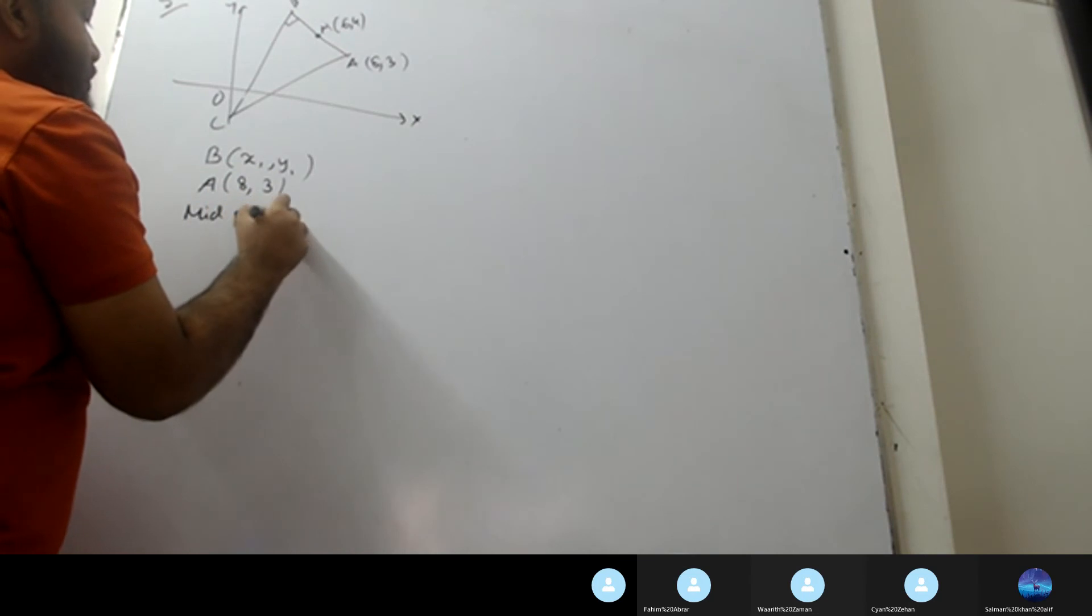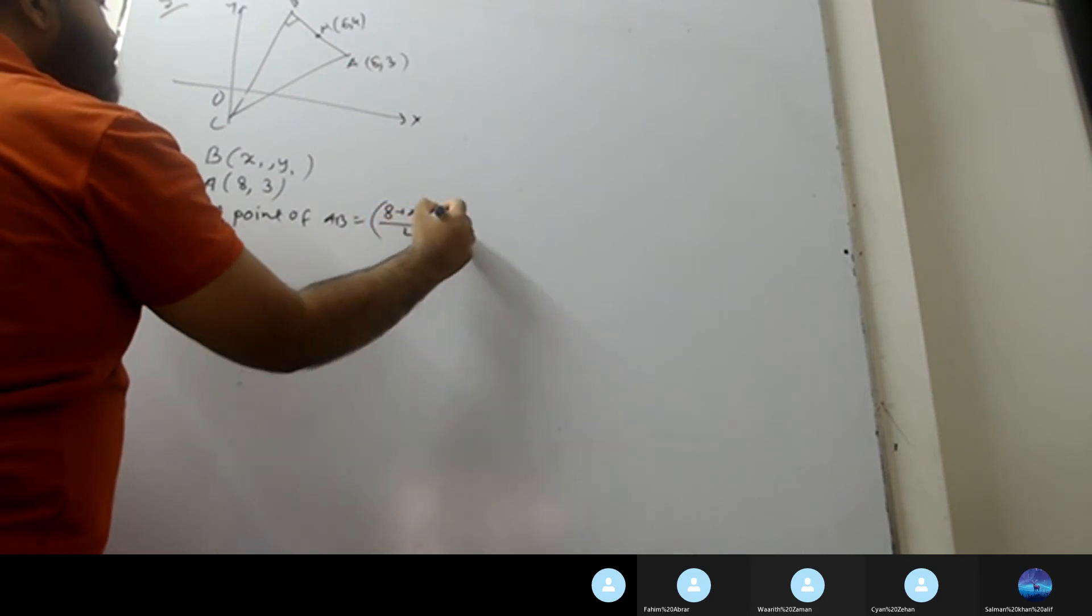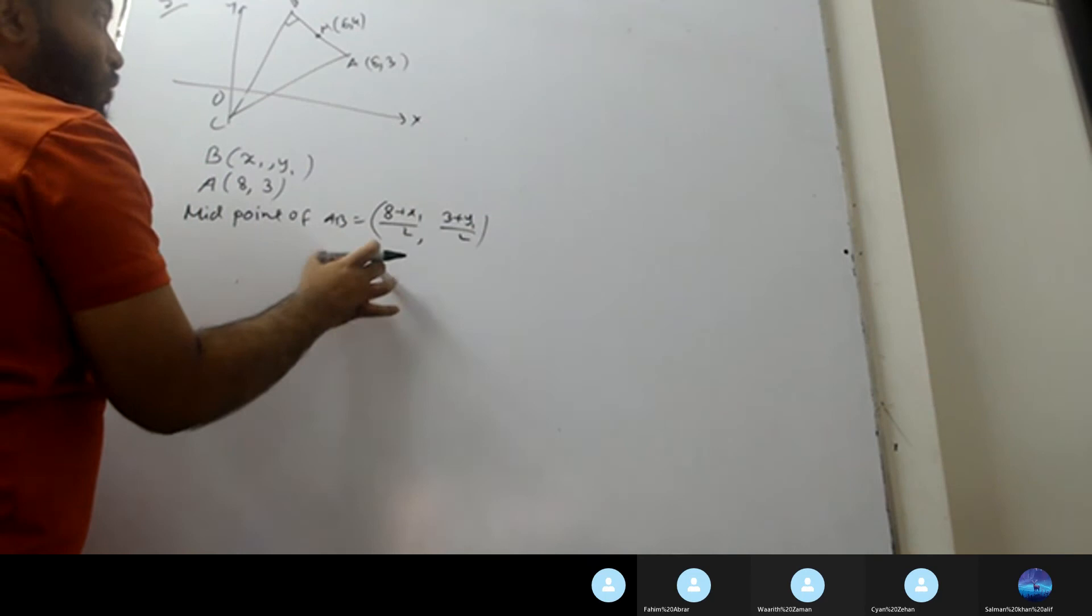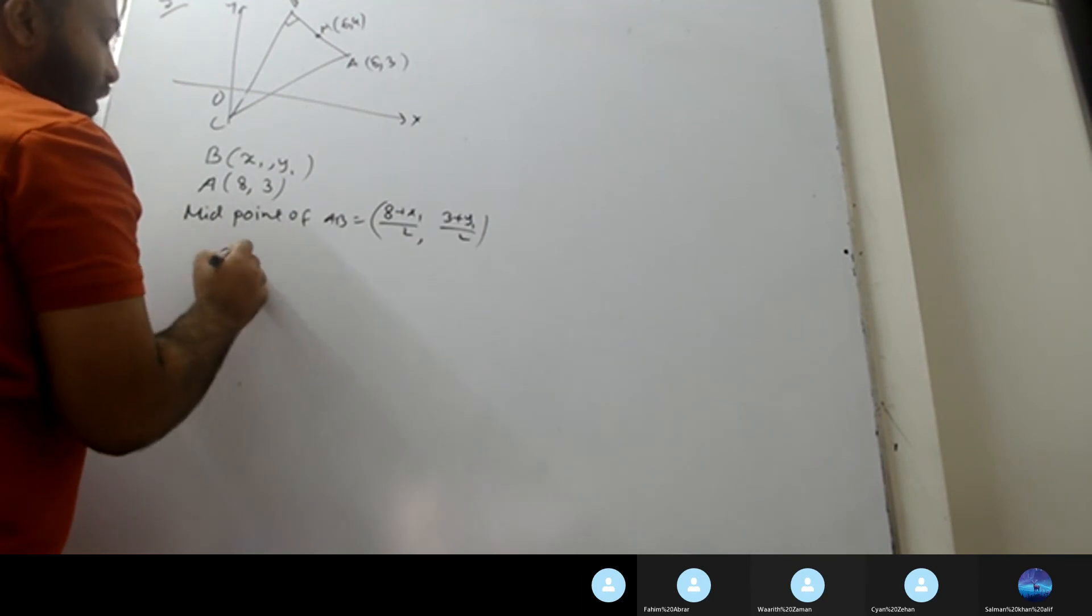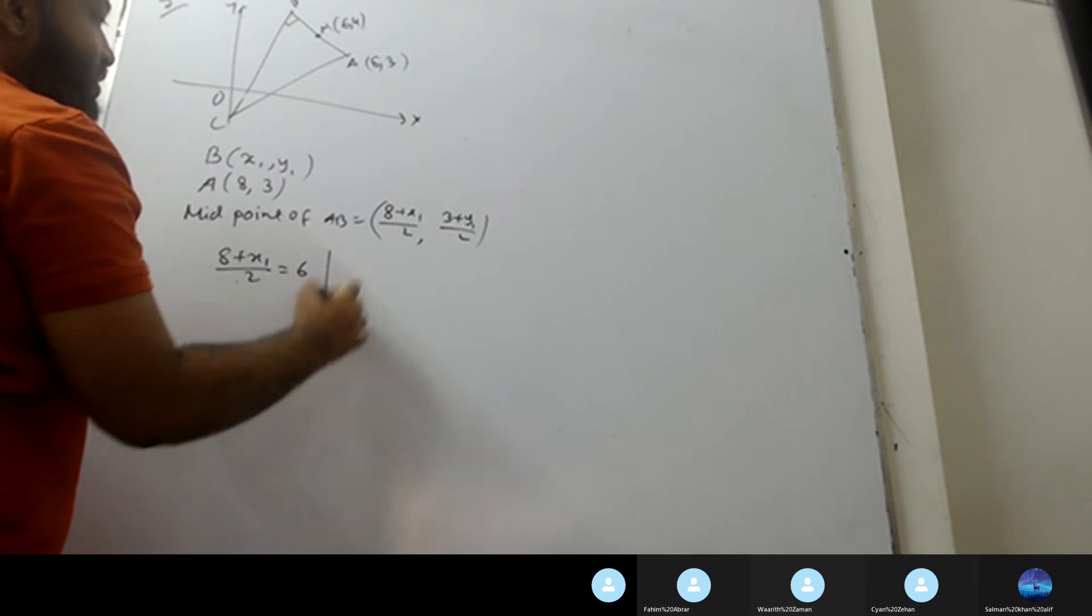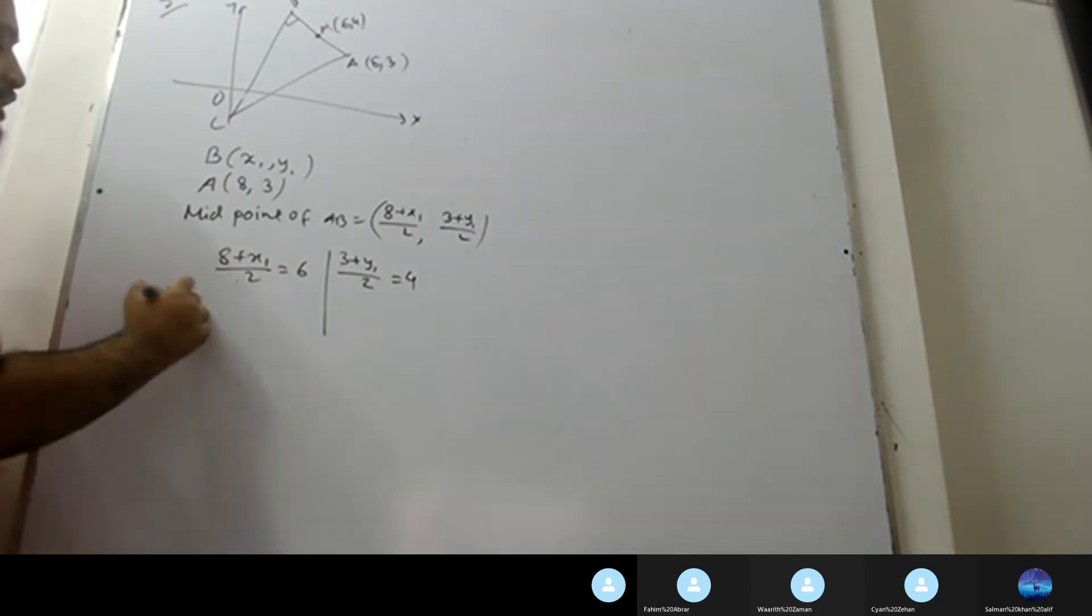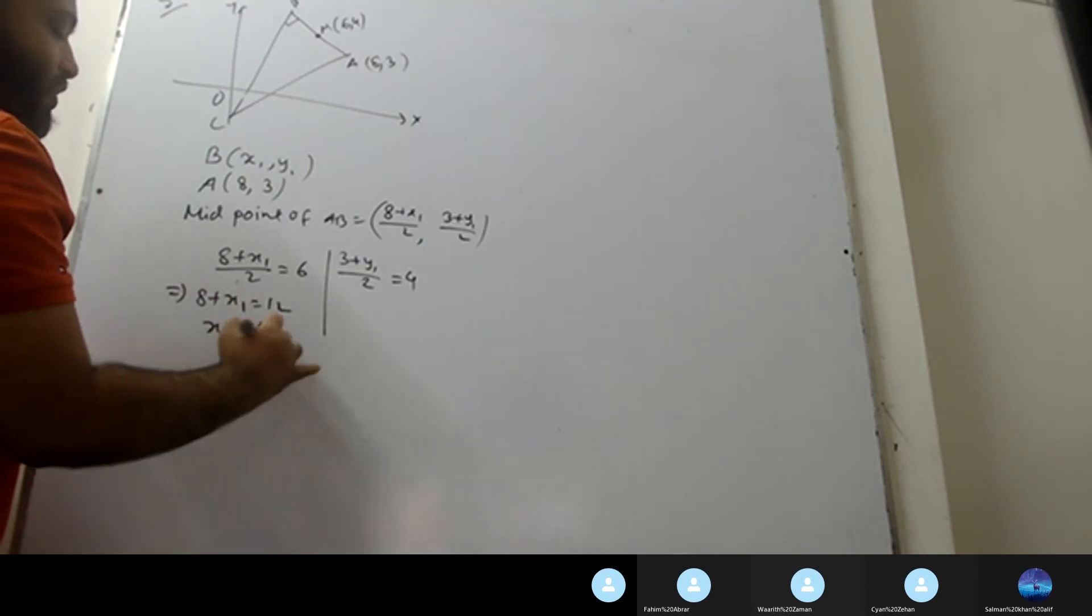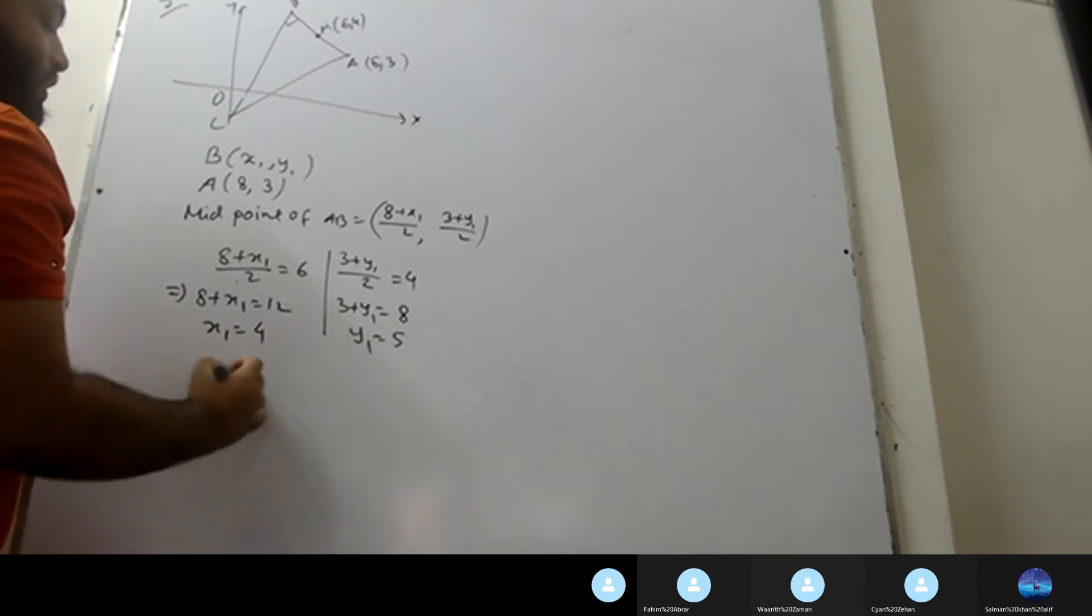Finding midpoint of AB using the formula: x equals (x1 plus x2) divided by 2, y equals (y1 plus y2) divided by 2. So x1 equals 12, which means x1 equals 12 minus 8 equals 4. Similarly, 3 plus y1 equals 8, y1 equals 8 minus 3 equals 5.